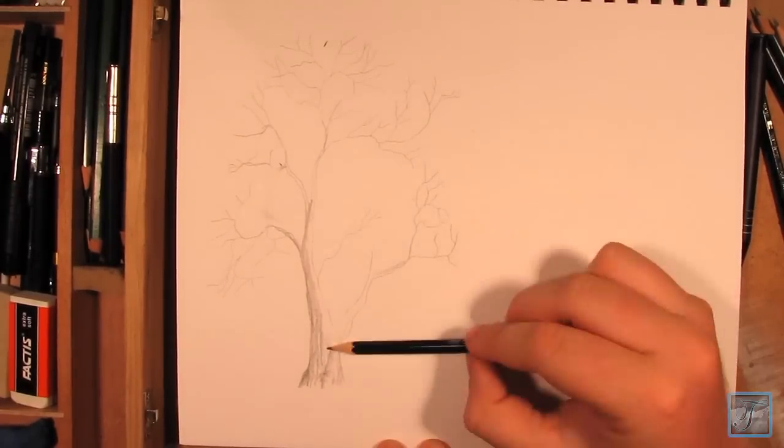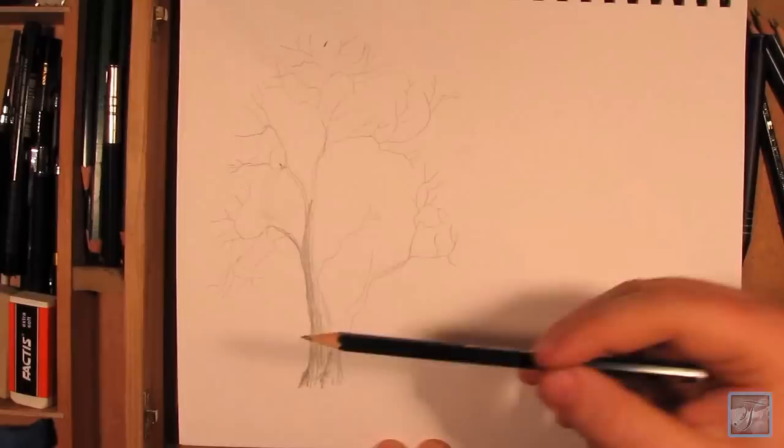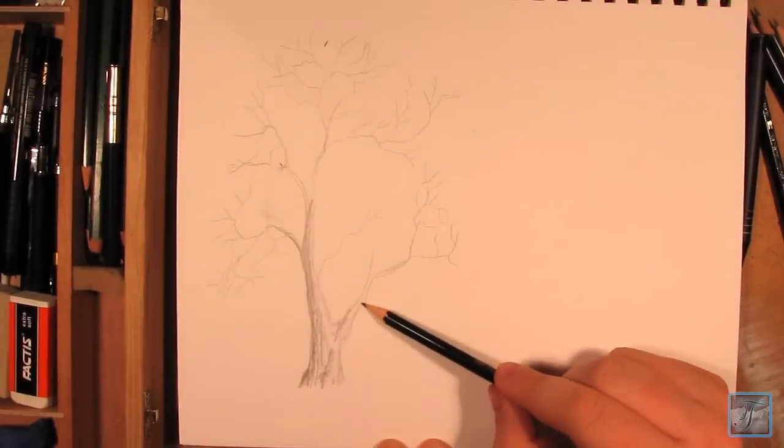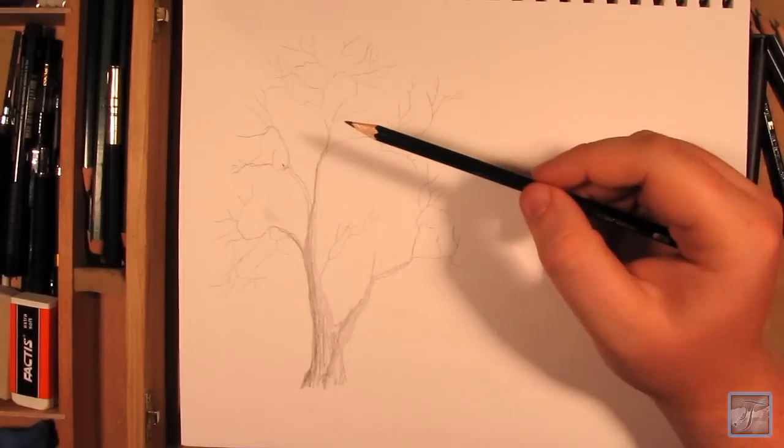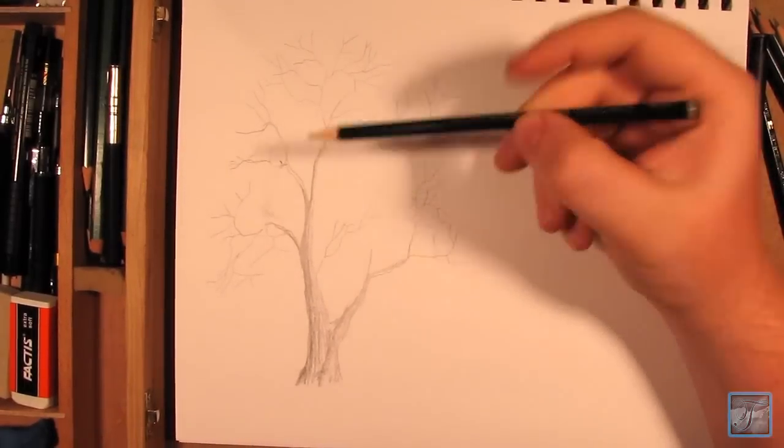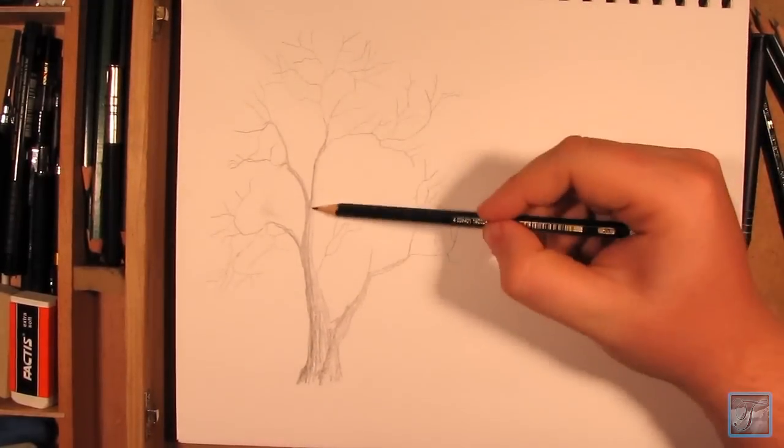Before you add the leaves, you can kind of take it as like a winter tree. That's usually the way I'll draw any of my trees—that way you can kind of see the framework of it.